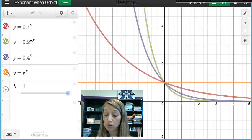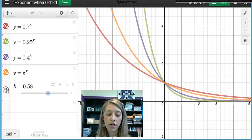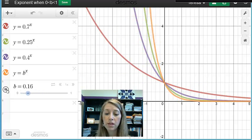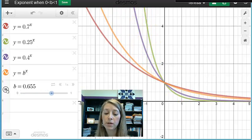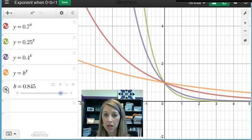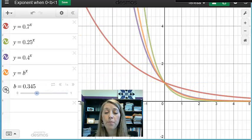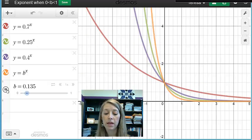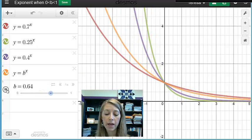And so let me show you again, a generic function here. This is, again, if b is equal to 1, which we know we cannot have. But what happens if we change it closer between 0 and 1? And so this is the shape that all of our exponential decay functions can take on when our base is between 0 and 1.